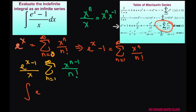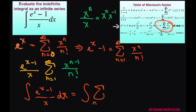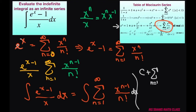Therefore, integrating (e to the x minus 1) divided by x dx equals the integral of the sum from n equals 1 to infinity of x to the power of n minus 1 divided by n factorial. Once you integrate this you're going to get the constant C, plus the sum from n equals 1 to infinity of x to the nth power divided by n times n factorial.